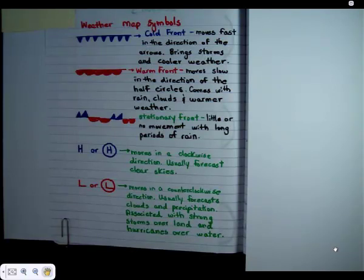The second type of thing that we're going to be looking at on the weather maps are high pressure systems and low pressure systems. These are represented by the letter H and L. Sometimes they'll just have the symbol by itself, and other times the symbol will have a circle around it.